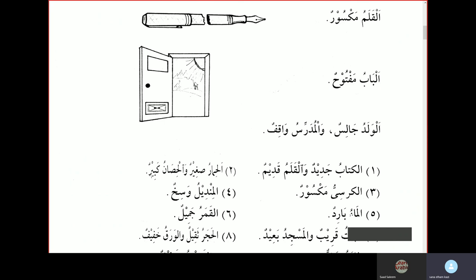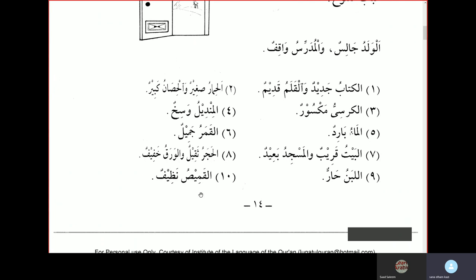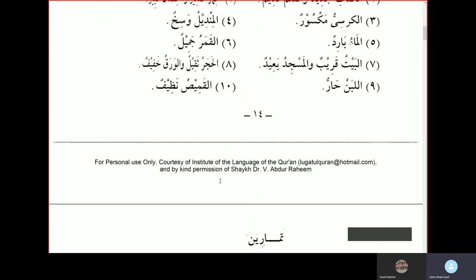Al-kursiyu maksurun, the chair is broken. Al-mindilu wasikhun, the handkerchief is dirty. Al-mau baridun, the water is cold. Al-kamaru jamilun, the moon is beautiful. Al-baytu kareebun wal-masjidu baeedun, the house is near and the mosque is far. Al-hajaru thakheelun wal-waraku khafeefun - al-hajaru is the stone, thakheelun is heavy, so the stone is heavy, and the paper is light. Al-labanu harun, the milk is hot. Al-kamisu nazifun, the shirt is clean.